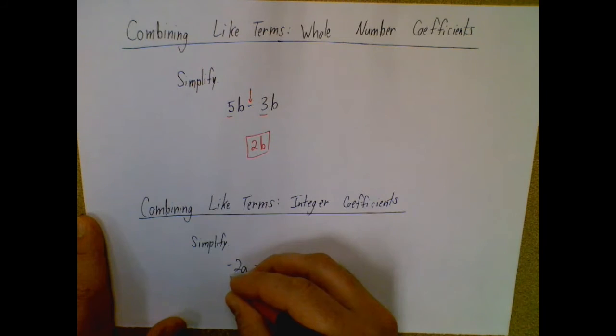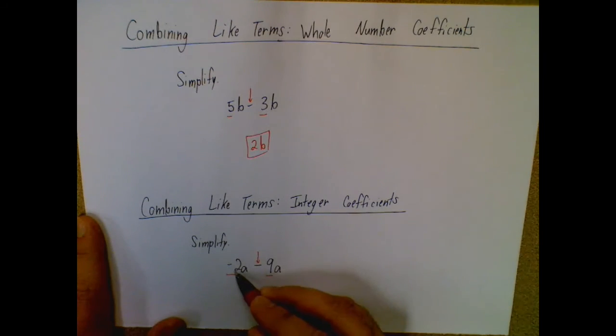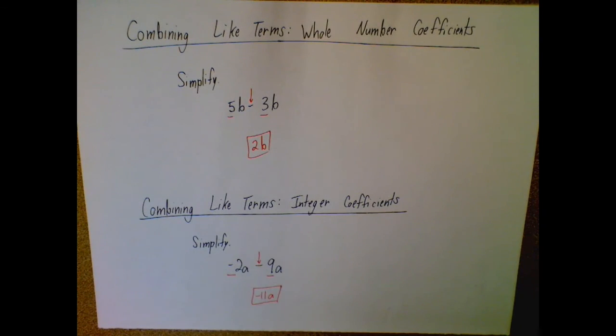So I'm just going to look at my coefficients, negative 2 and 9, and I'm going to subtract. So negative 2 minus 9 gives you negative 11, and I'm just going to bring that single a down and end up with negative 11a. And that's all there is to it.